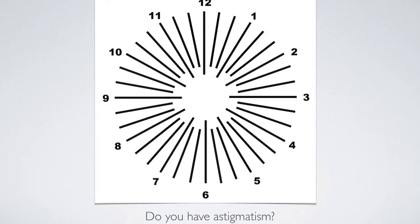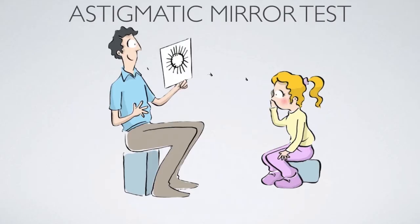So everything should be perfectly equal. If there's any distortion — for example, you might see 12 and 6 o'clock darker, or it could be 9 or 3 — these are typical examples of astigmatism. If there's any distortion from any distance, then you have astigmatism. You can have astigmatism in just one of your eyes, so you must check one eye at a time.